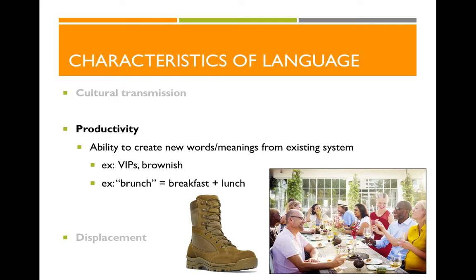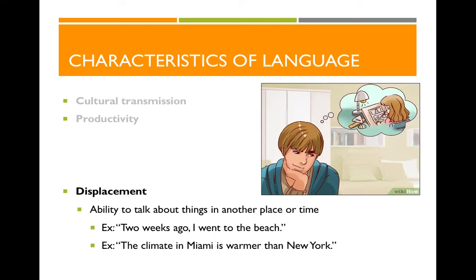The last characteristic of human language is displacement — the ability to talk about things in another place or another time. This includes talking about events in the past, things that will happen in the future, or things happening on the other side of the world. Humans often communicate about things outside of the right here and right now, and this is in big contrast to how primates typically communicate.